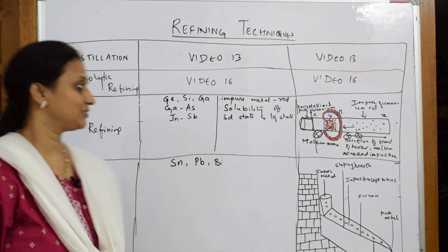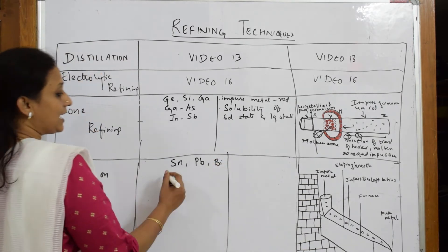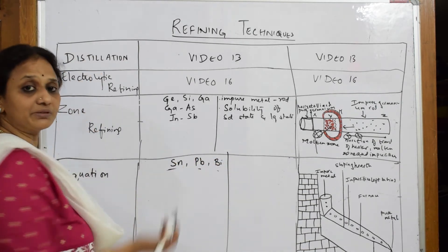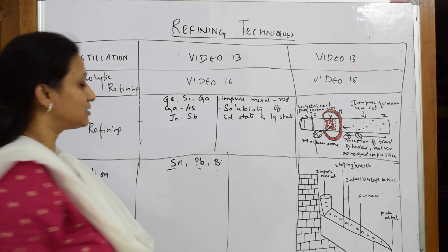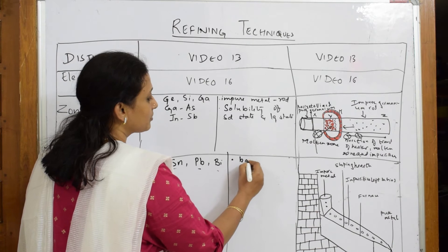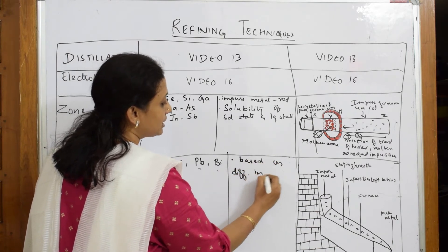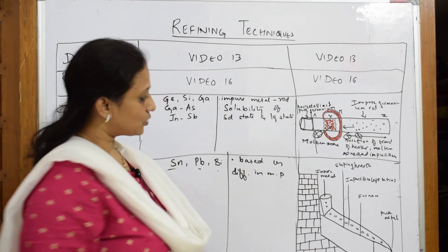Next, when we speak about liquidation, through liquidation process I can refine tin, lead, and bismuth. The principle here is based on difference in melting points.